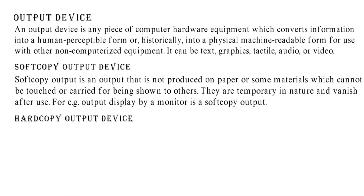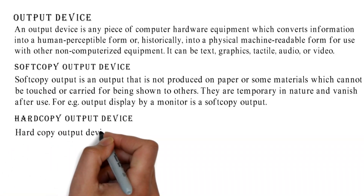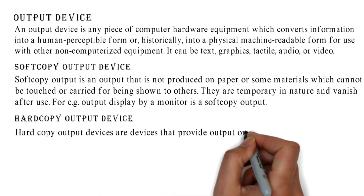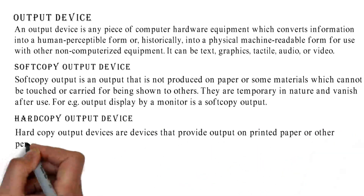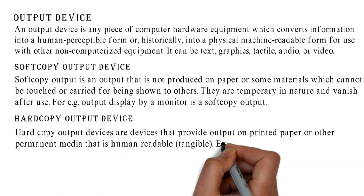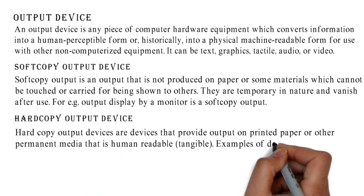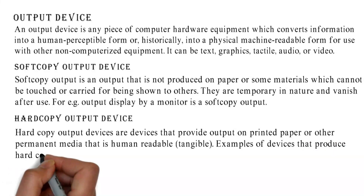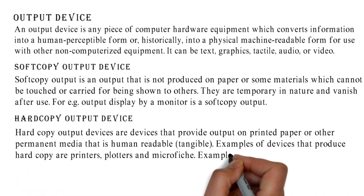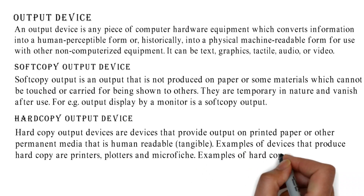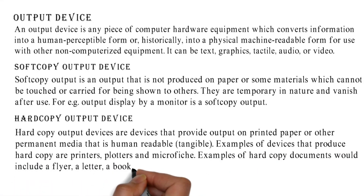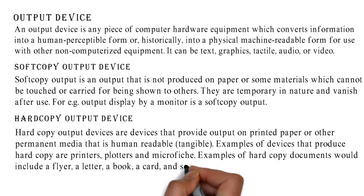Hard Copy Output Device. Hard copy output devices are devices that provide output on printed paper or other permanent media that is human-readable and tangible. Examples of devices that produce hard copy are printers, plotters, and microfiche. Examples of hard copy documents would include a flyer, a letter, a book, a card, and so on.